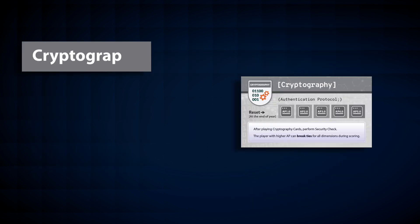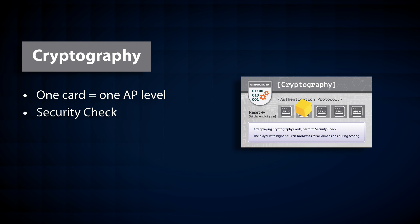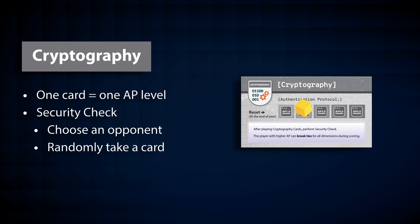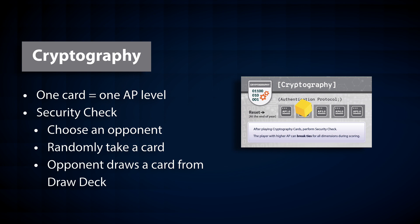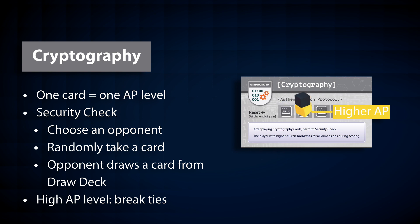Cartography. This is the cartography board. For each cartography card you play, you can move one level up on your authentication protocol, or AP. Then you can perform a security check: choose an opponent who is weaker than you in AP and randomly take one card from them. The opponent draws a card from the draw deck as compensation. At the end of the year, the player with a higher AP can break ties in the calculation of scores of all dimensions. If two players are on the same AP level, whoever got the level earlier is stronger — you can remember this by stacking up the tokens at the same level, where whoever is at the bottom has the strongest AP. You need to reset your AP levels every year, so before starting the next year, remove all tokens from this board.